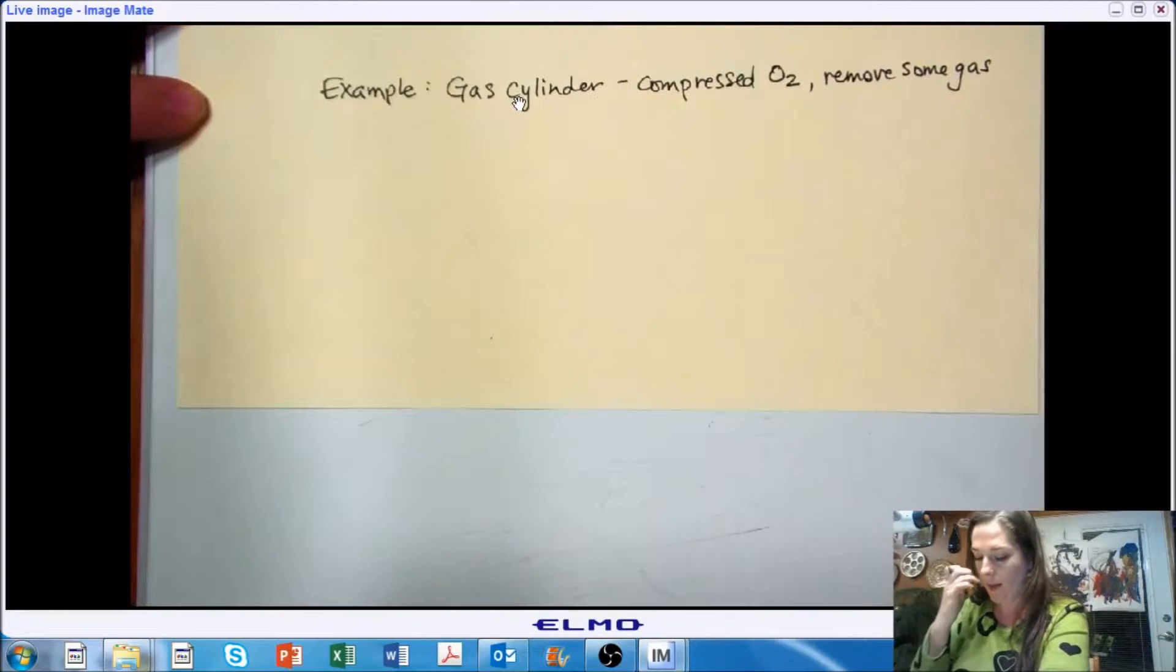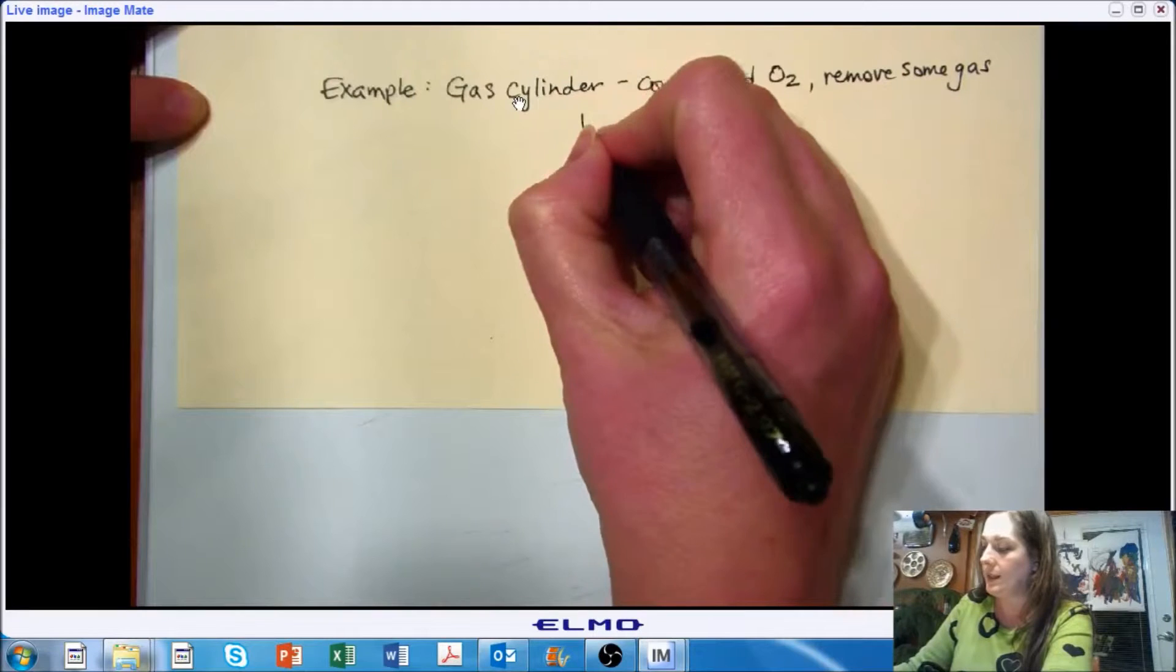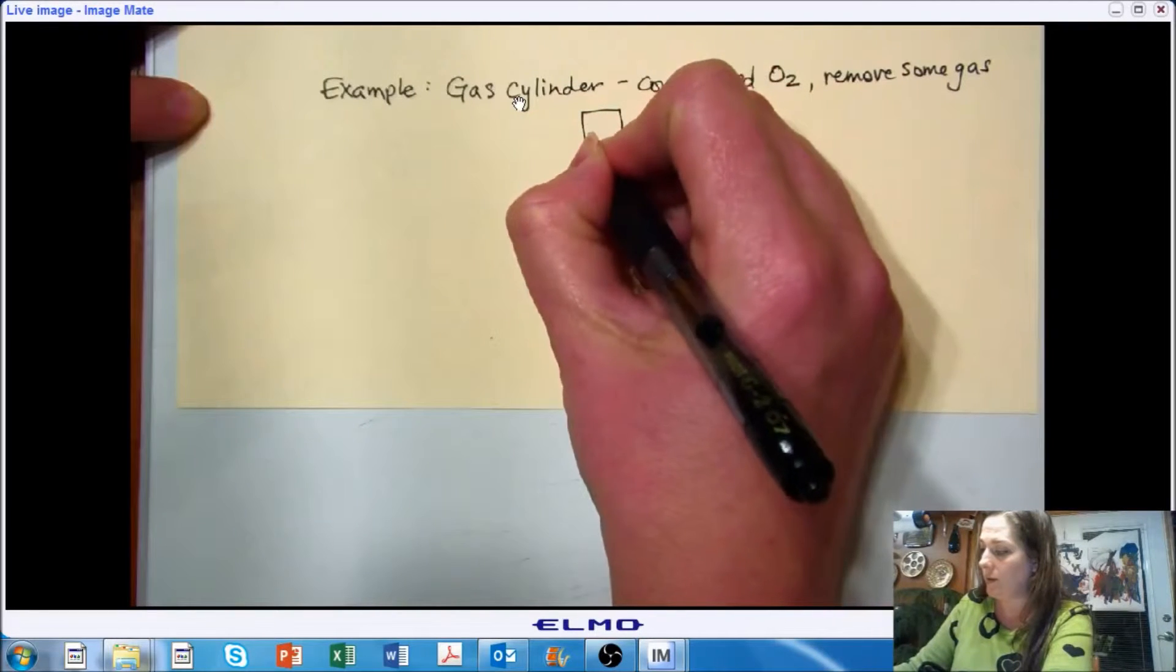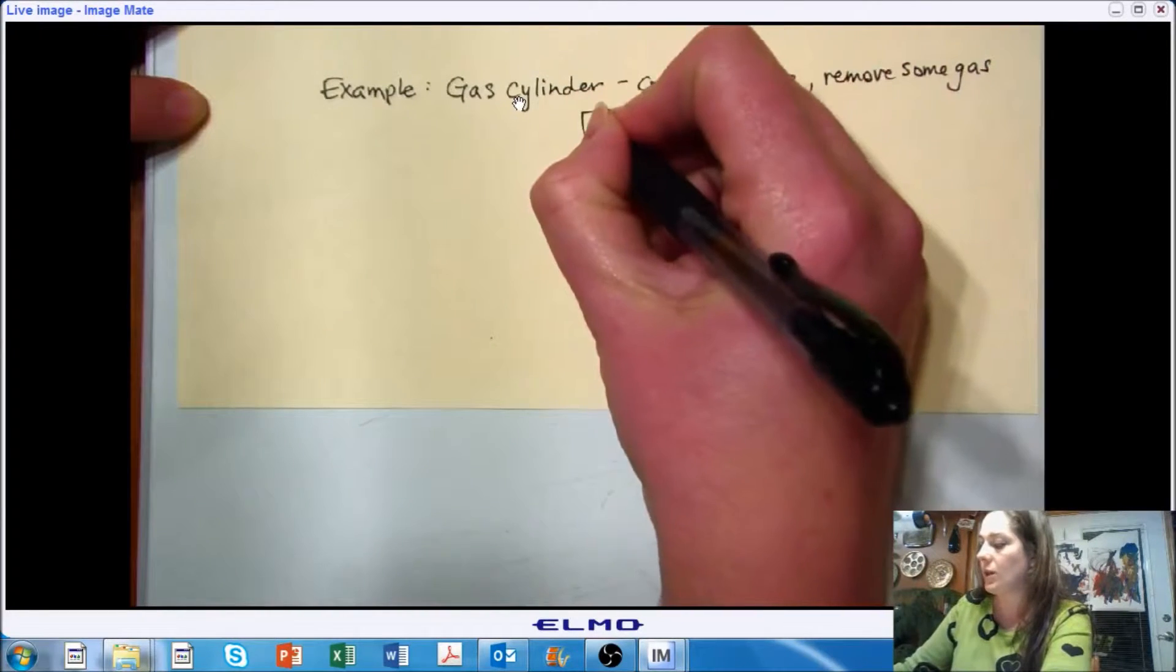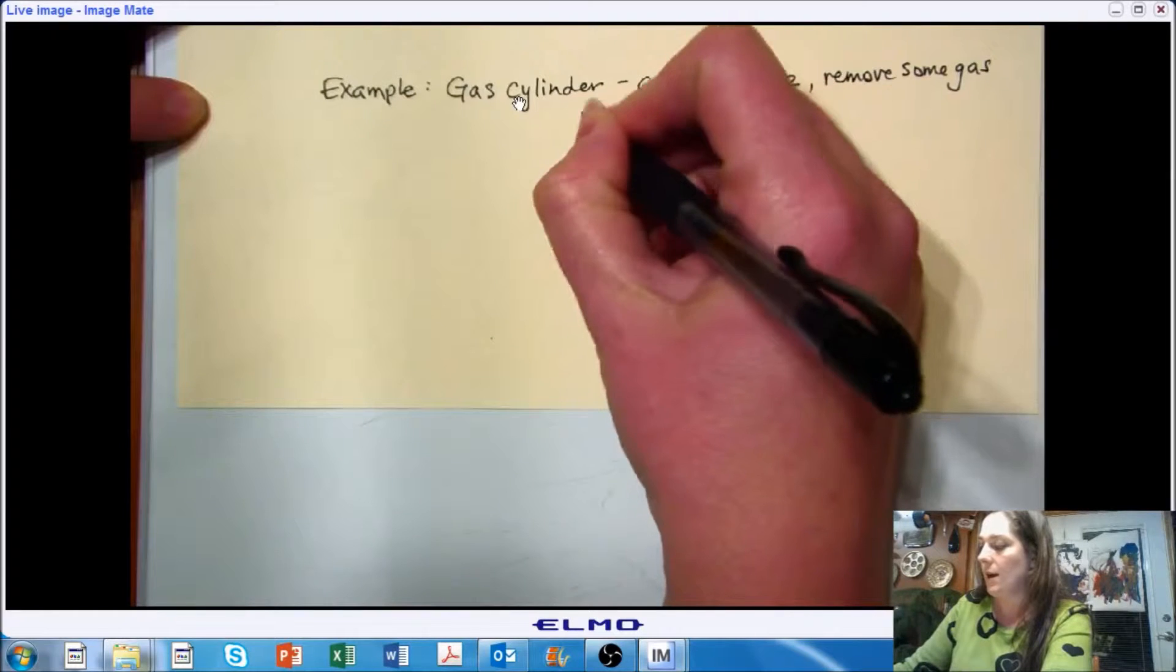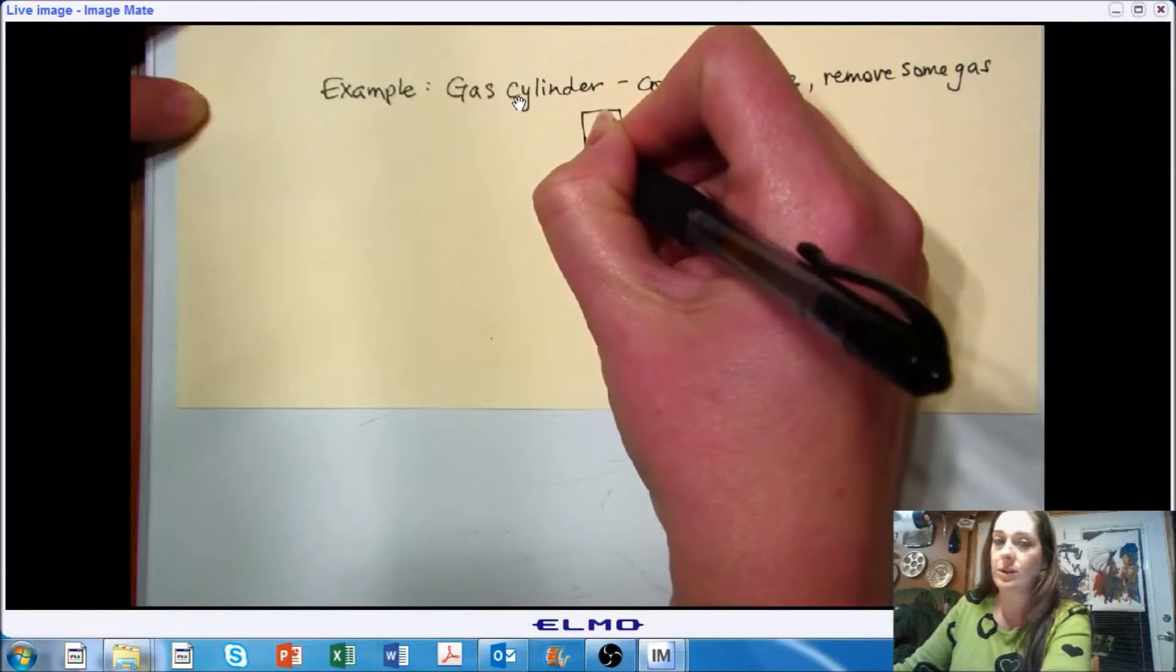And we're going to follow our homework format in this example to get ourselves in the habit of doing that. I like to see sketches, so even just simple ones, just to show me that you understand the problem. So we have a control space, which is our cylinder in this case, and inside we have O2.